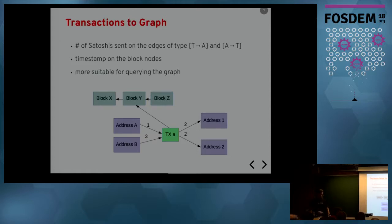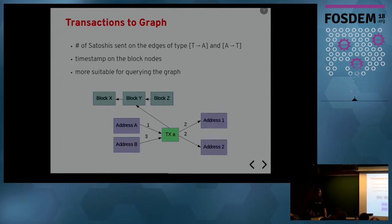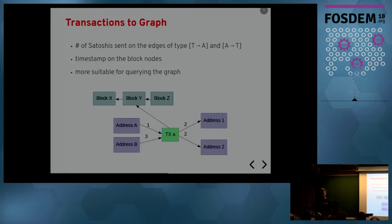In the other approach, I have more information: nodes of addresses, nodes of transactions, and nodes of blocks. I have information about in which block a transaction appeared, and also the amounts of satoshis sent in the network. In the previous representation I only had edges showing that some address was communicating with another address; here I have more information capturing these multi-input and multi-output transactions.